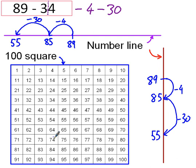And then over here on the 100 square, I would start at 89, which is there. Take away 4, 1, 2, 3, 4, 85 to start with, and then take away 30. So take away 10, take away 20, take away 30, lands me on 55. So the answer is 55, and I got that using partitioning by splitting the second number into the tens and units.